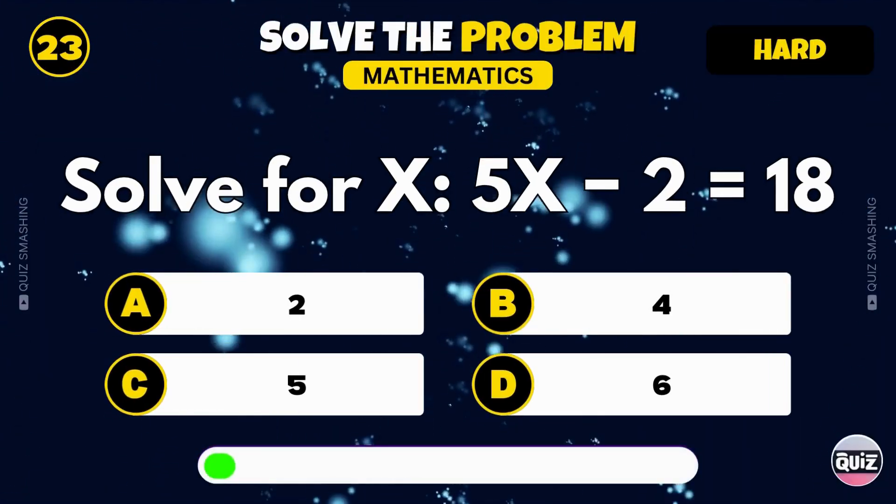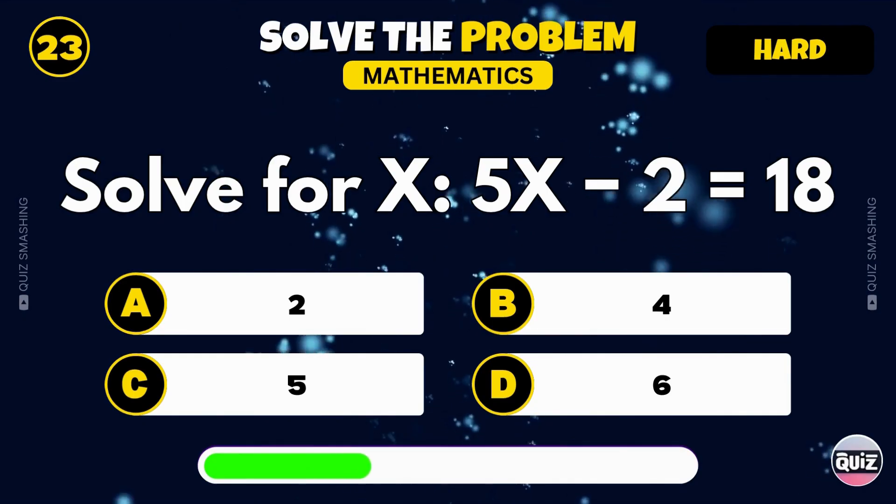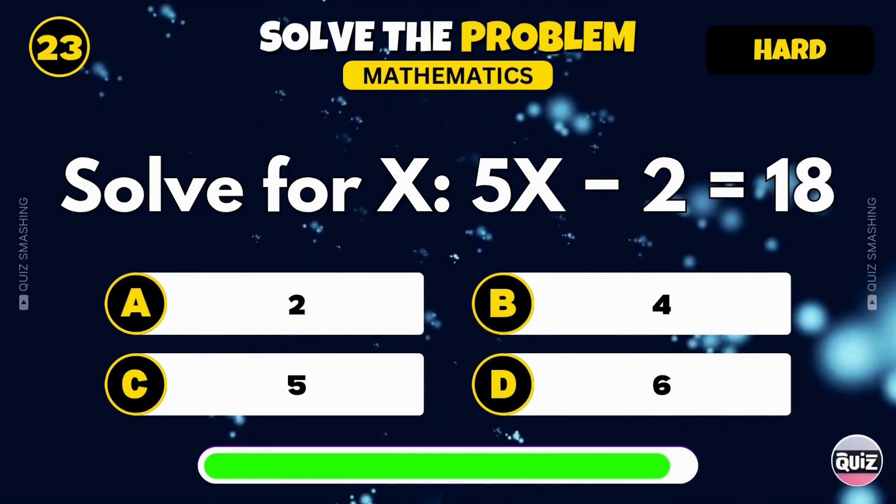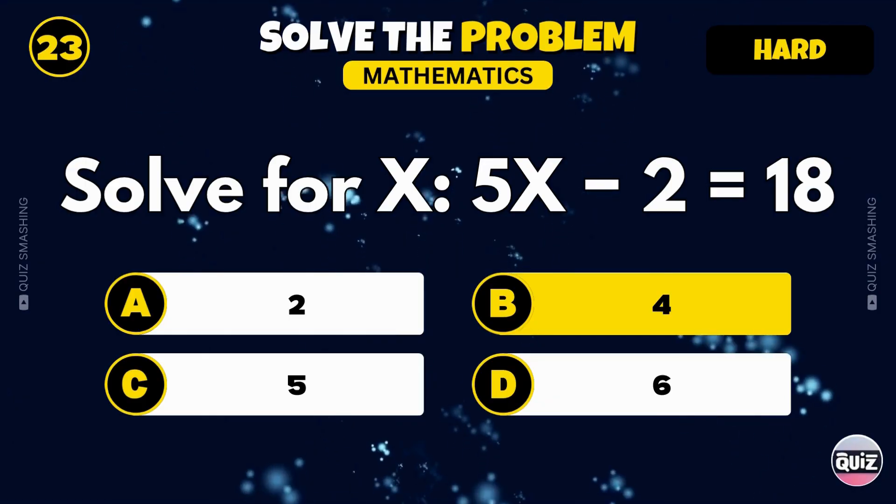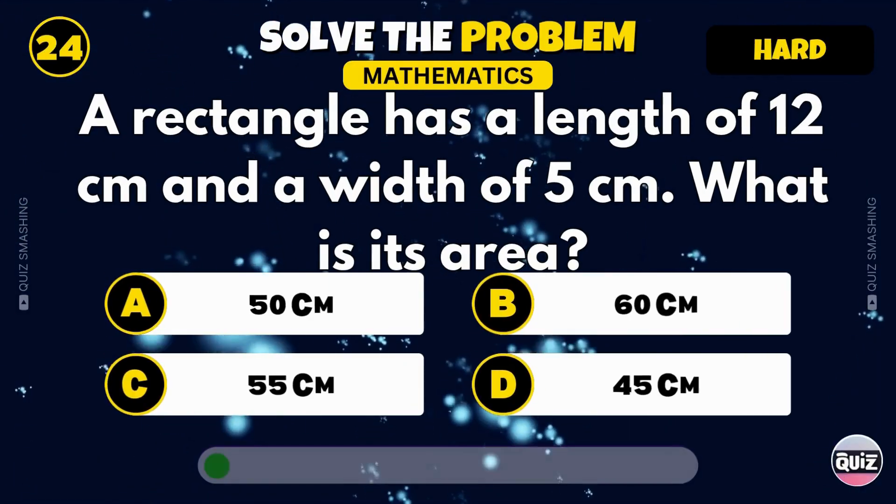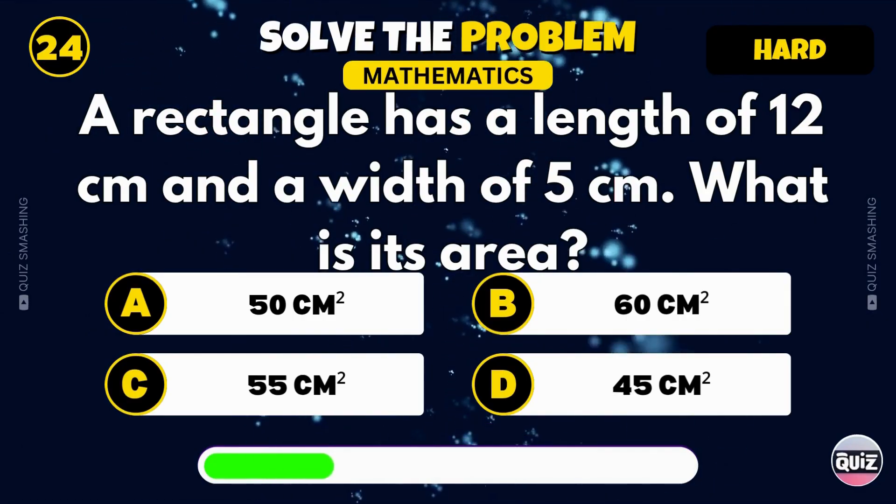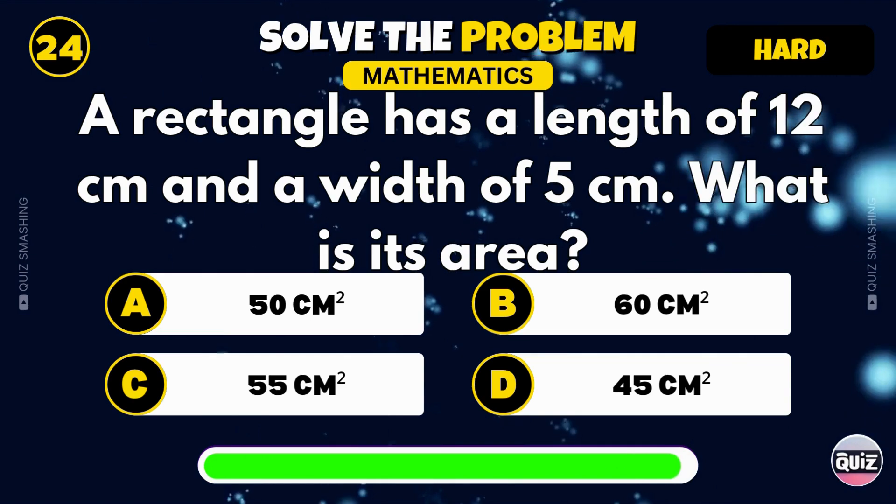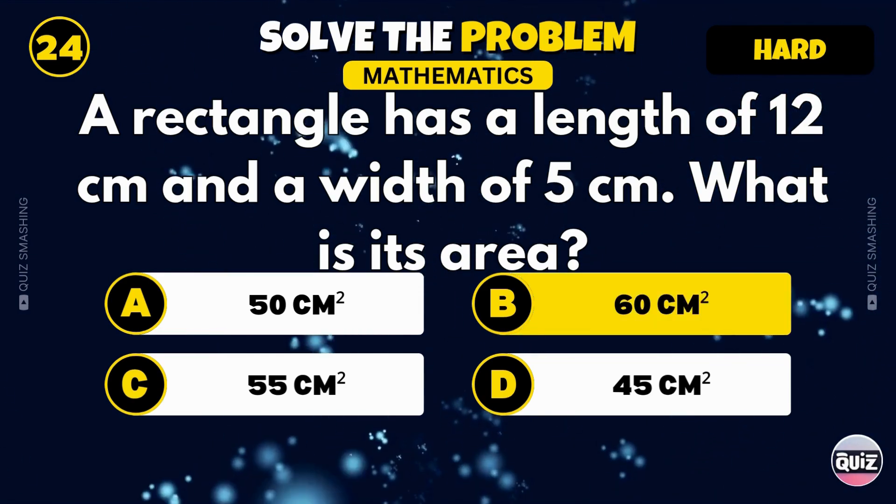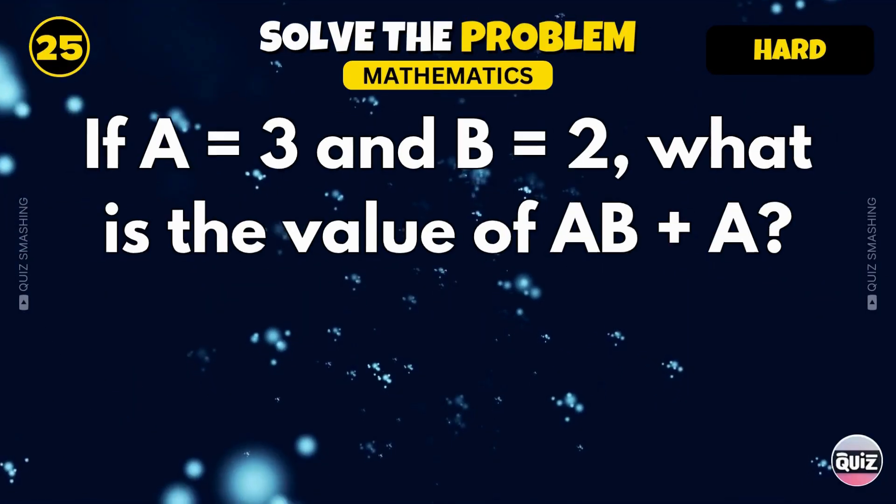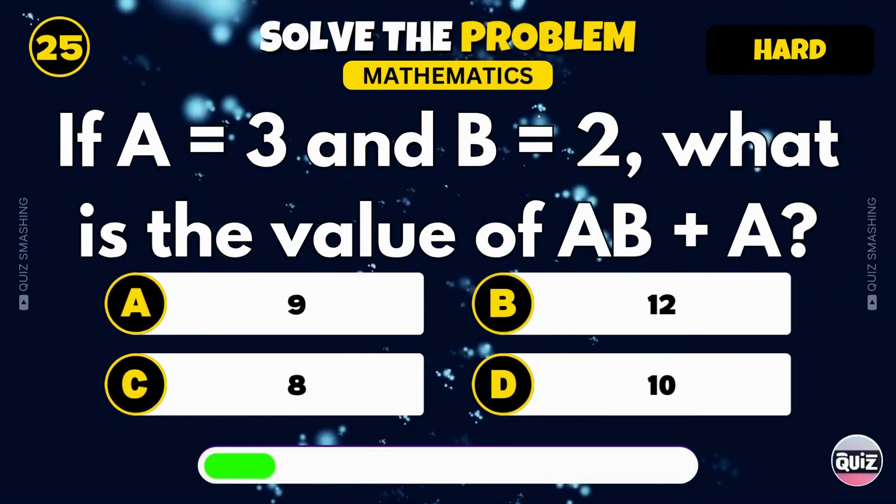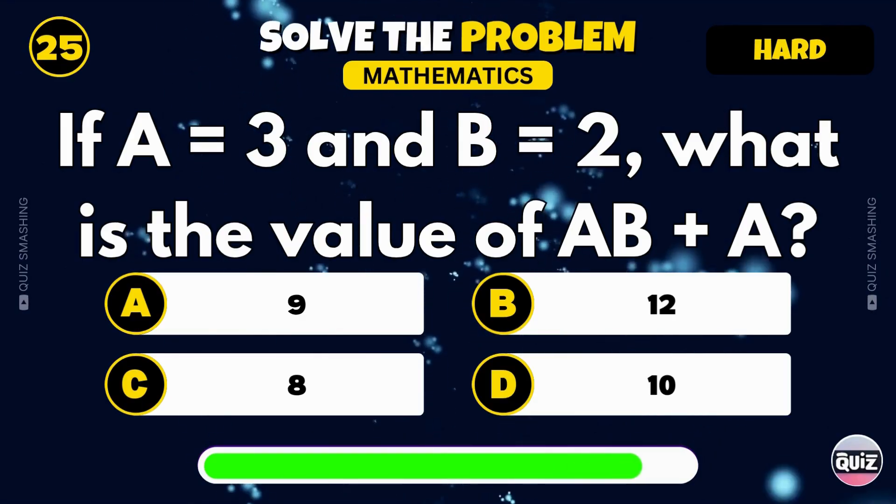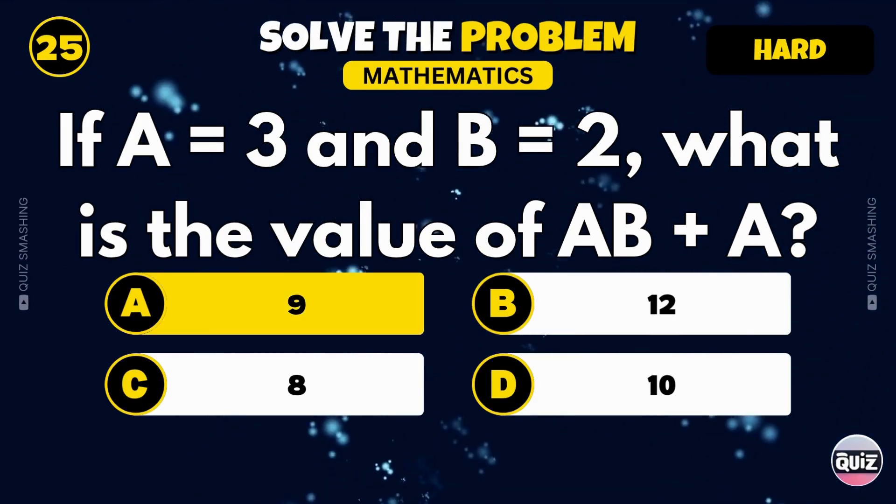Solve for x: 5x minus 2 equals 18. Yes, x equals 4. A rectangle has a length of 12 centimeters and a width of 5 centimeters. What is its area? The area is 60 square centimeters. If a equals 3 and b equals 2, find the value of ab plus a. That's 9.